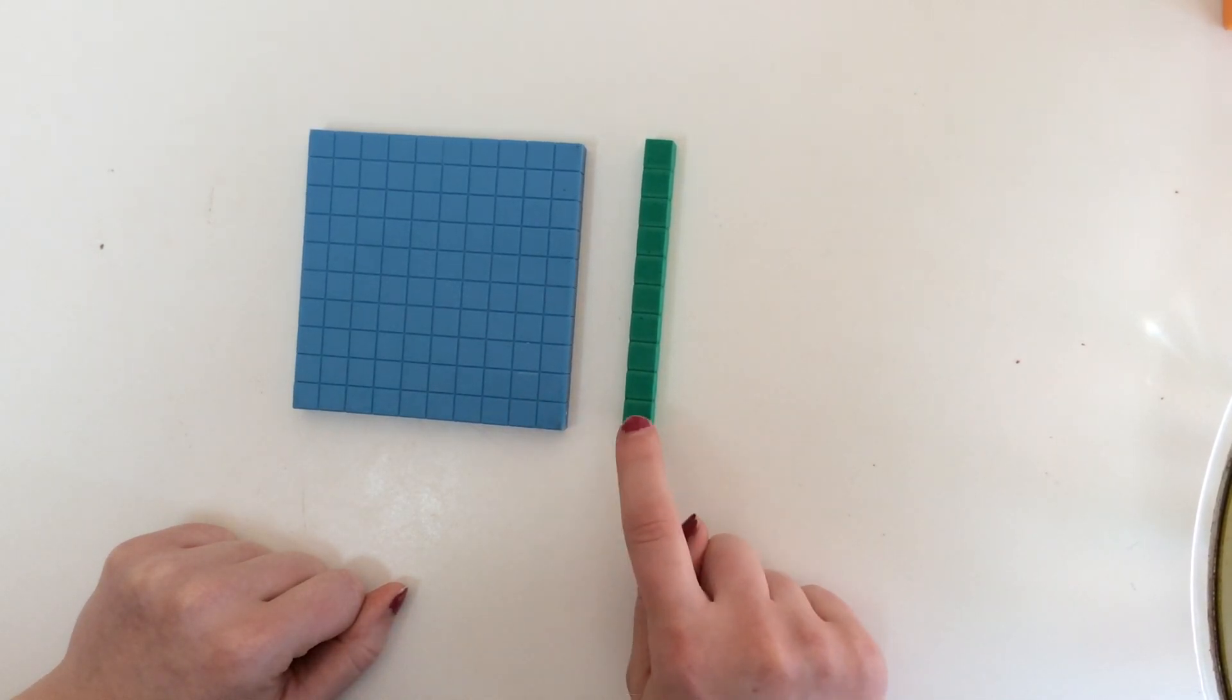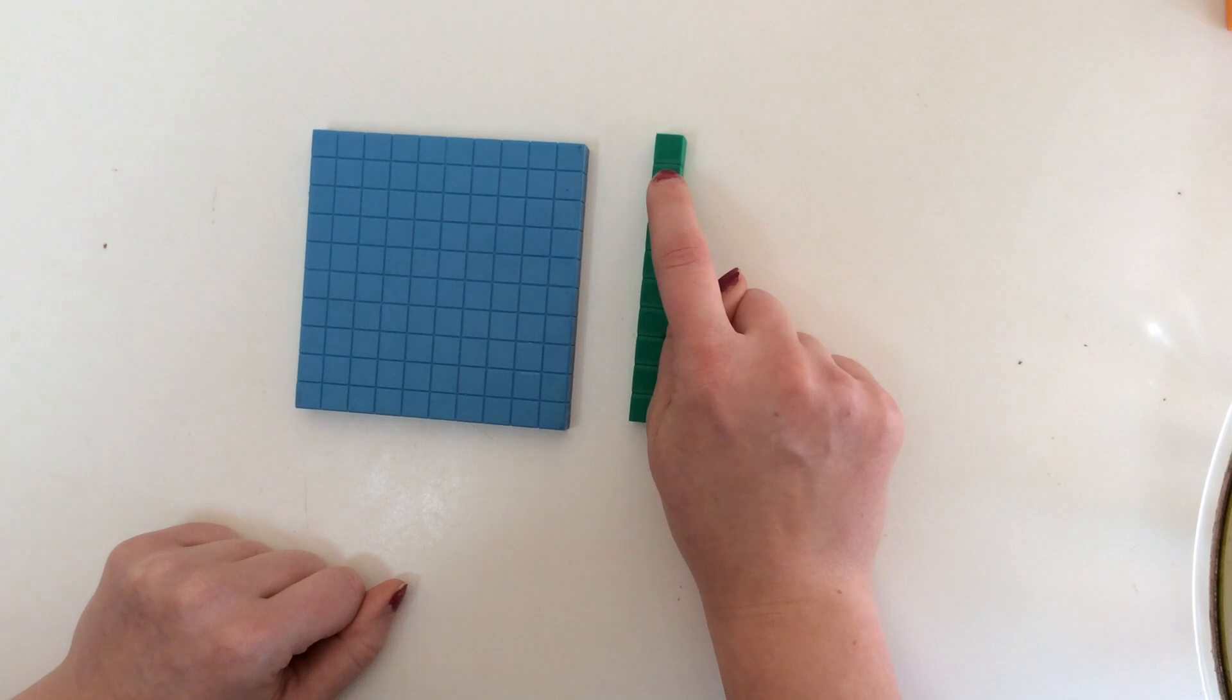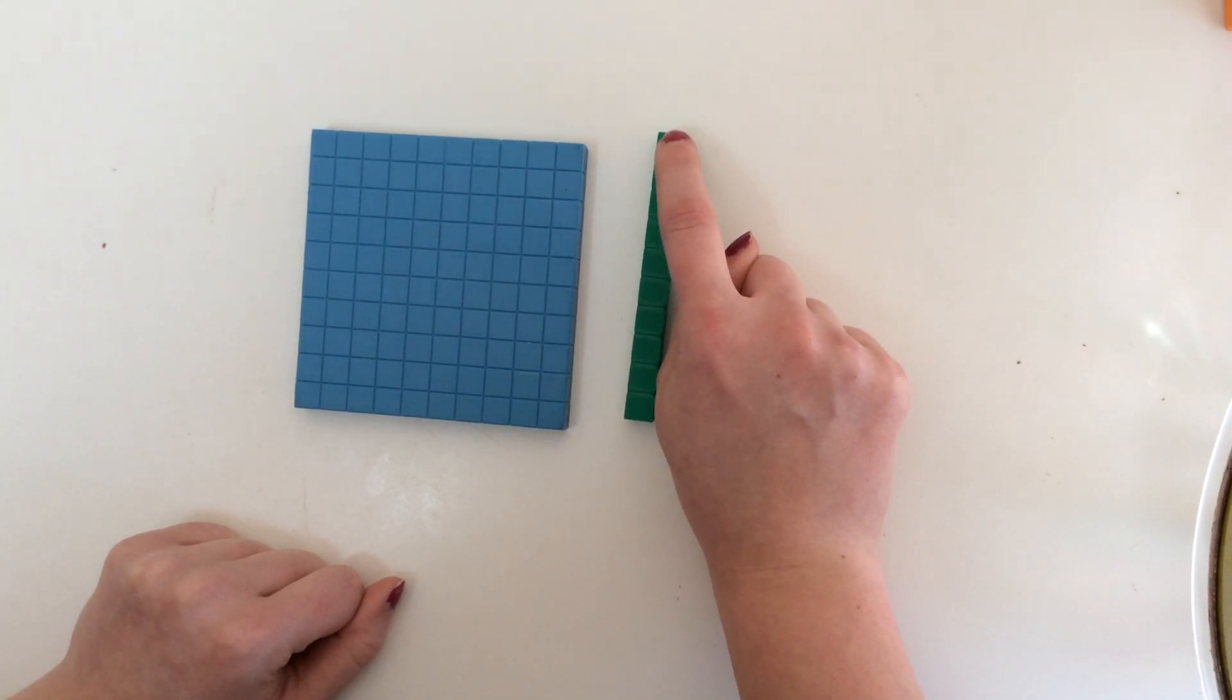100 here, 101, 102, 103, 104, 105, 106, 107, 108, 109, 110 cubes.